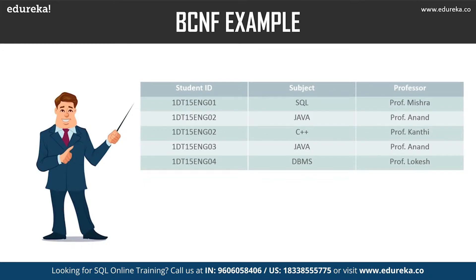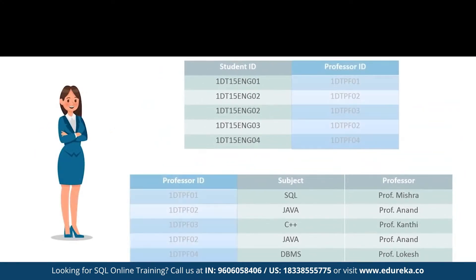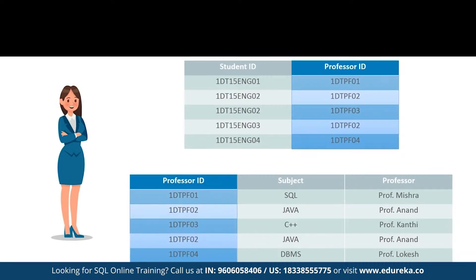Student ID and subject form the primary key, meaning the subject column is a prime attribute. However, professor depends on subject, and while subject is a prime attribute, professor is a non-prime attribute — which is not allowed by Boyce-Codd Normal Form. To satisfy Boyce-Codd Normal Form, we divide the table into two parts. The first table holds student ID and a new column, professor ID. The second table has professor ID, professor, and subject columns. By doing this, we remove the non-prime attribute's functional dependency. Professor ID becomes the super key of the second table, and remaining columns are functionally dependent on it — satisfying Boyce-Codd Normal Form.